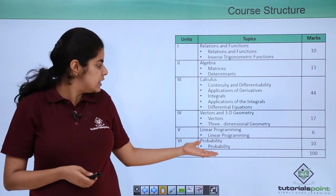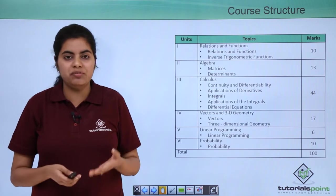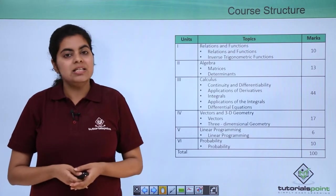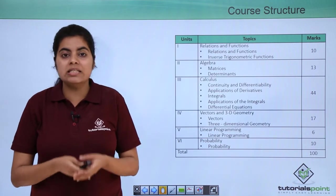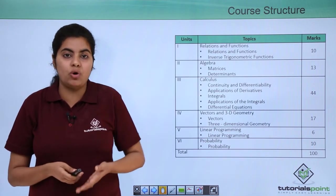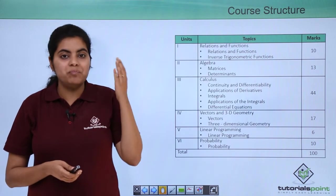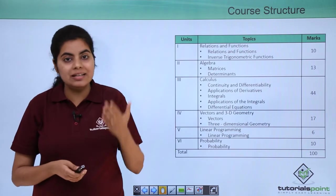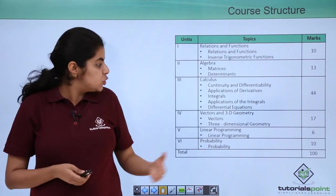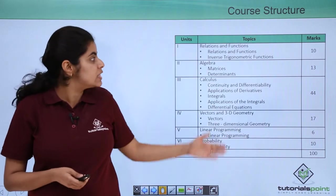Last unit that is in the syllabus mentioned is probability. Probability you have been studying from your junior classes as well. So in class plus two you'll be studying probability in more detail. This is again very important if you have to opt for engineering. Also probability is again based on how you can interpret, analyze and understand things on your own. So probability is also there in the syllabus constitutes again ten marks as was the unit one.